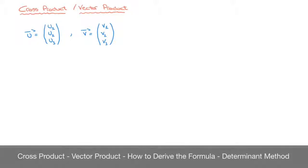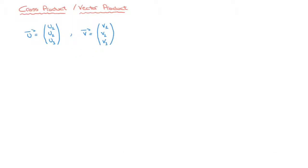We now learn how to find the formula for the cross-product, also known as the vector product, of two vectors. To calculate the cross-product of two vectors, we basically have two options.